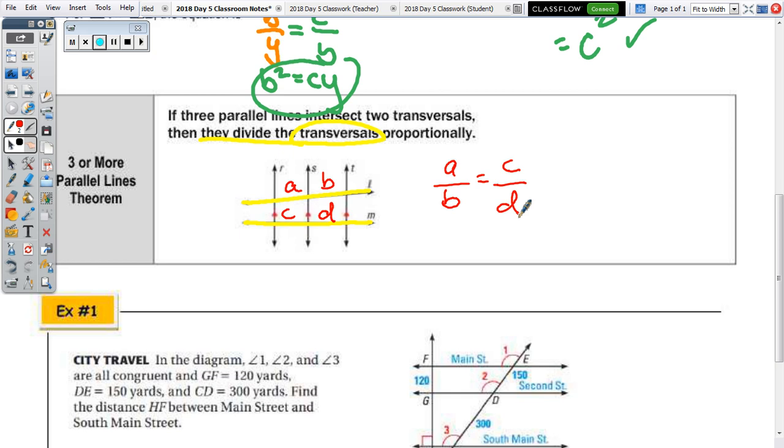Can someone give me another proportion that would be true? You could also take a look at A over A plus B. So, part to whole equals part to whole. You could do, instead of A to B, you could do A to C equals B to D. You still have that same cross product. So, let's take a look at the example.